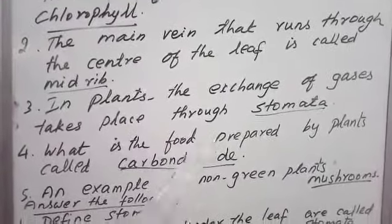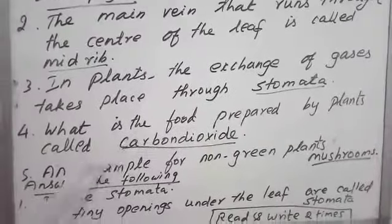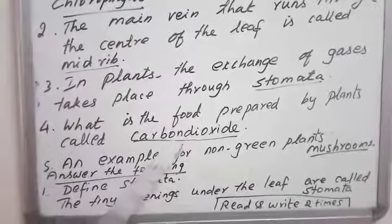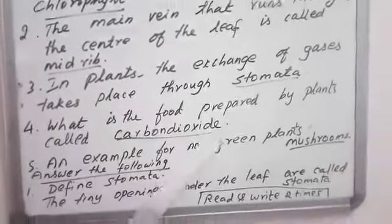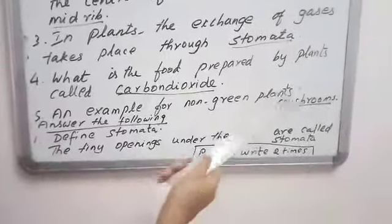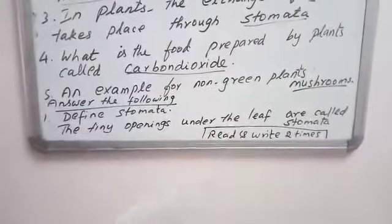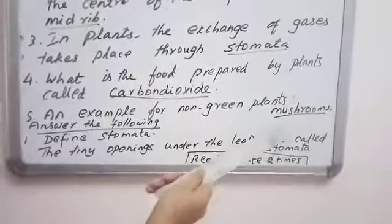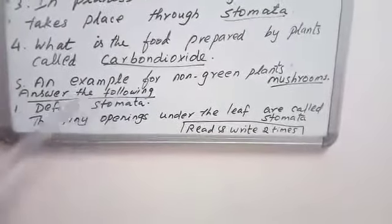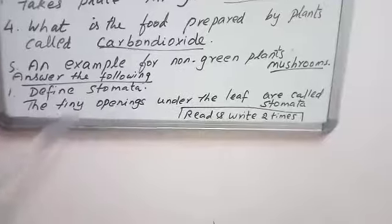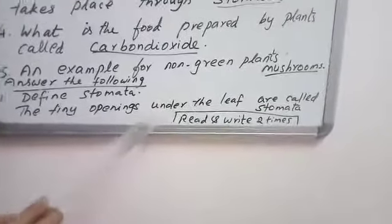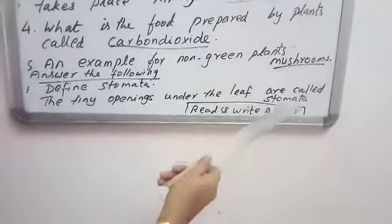What is the food prepared by plants called? The food prepared by the plant is known as carbon dioxide: C-A-R-B-O-N-D-I-O-X-I-D-E. An example for non-green plants is mushroom: M-U-S-H-R-O-O-M. Define stomata — the tiny openings under the leaf are called stomata.